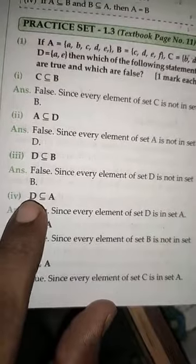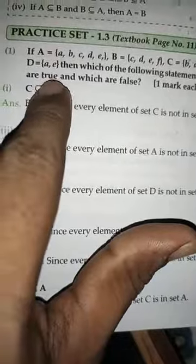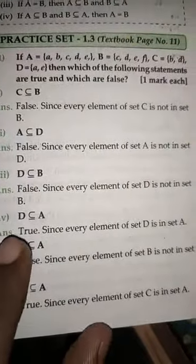Next, fourth one, D subset of A. All elements of D are in A, so this is correct. Next, B is a subset of A. B is also correct.